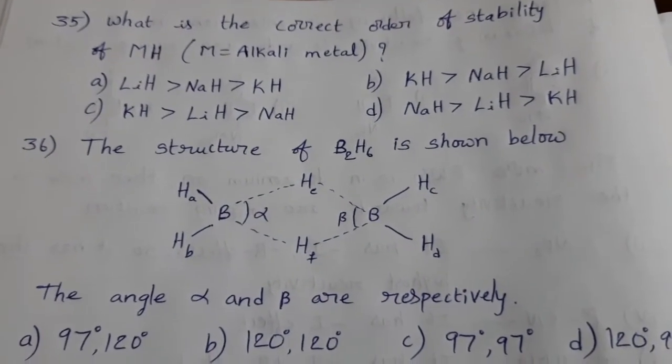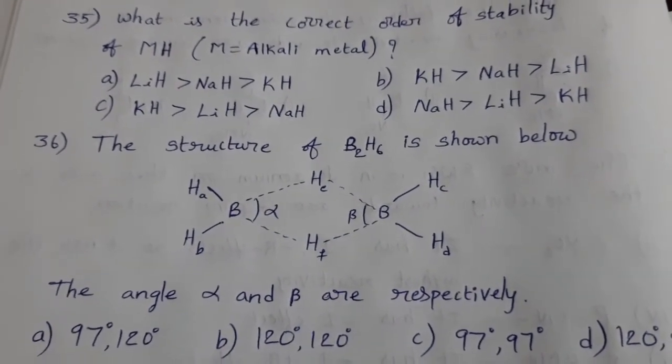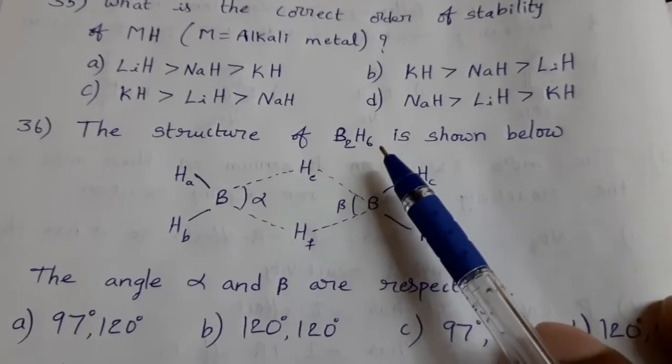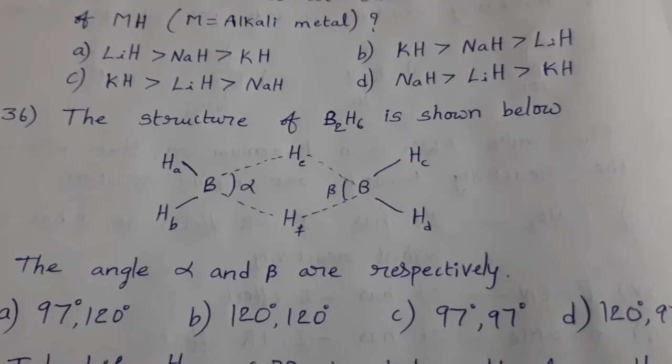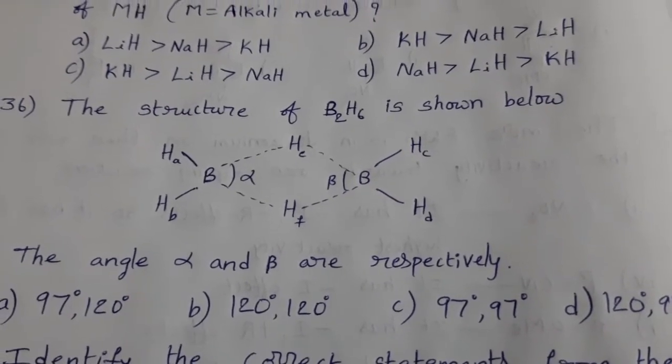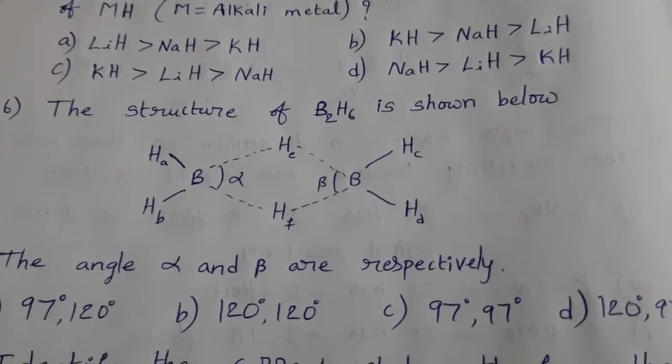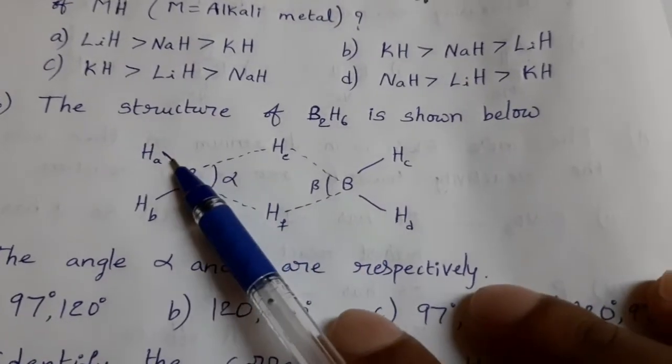Next, the structure of B2H6 is shown below. Diborane B2H6. Already we know that in B2H6, banana bond or tau bond or bridged hydrogen atoms are present.